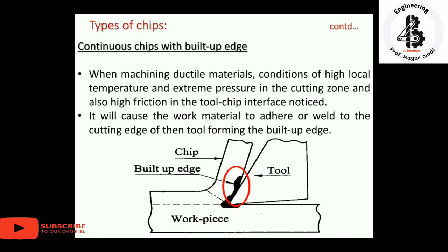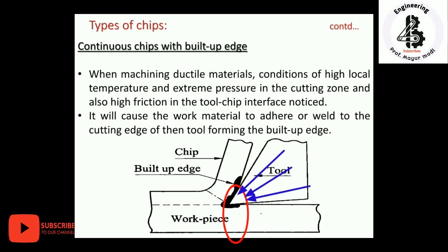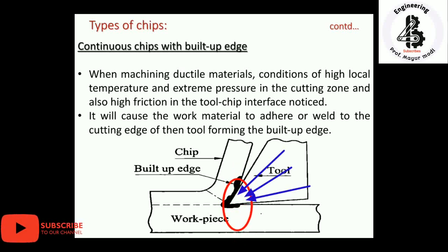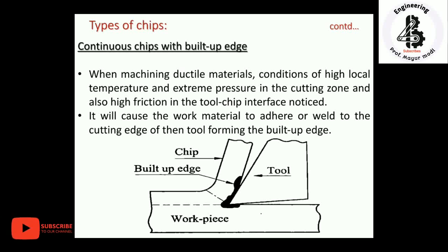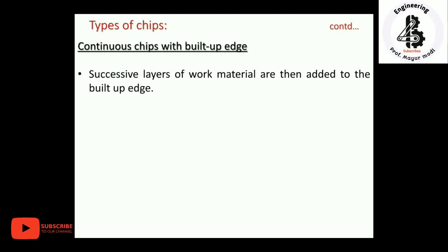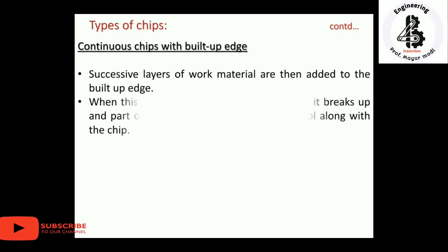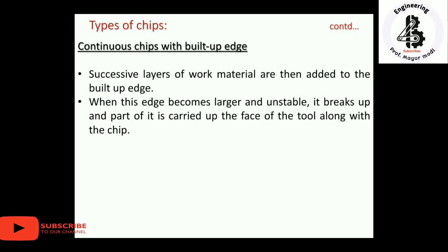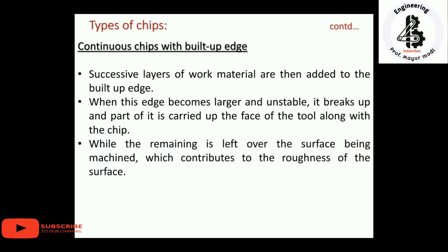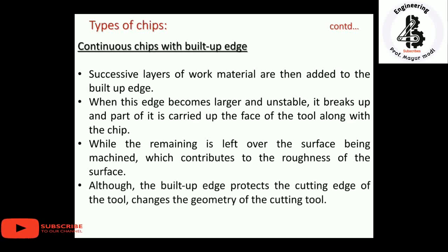Due to material defects on the workpiece or excessive heat developing at the tool-chip interface, a weld action is carried out, forming a continuous chip with built-up edge. Successive layers of work material are then added to the built-up edge. When this edge becomes larger and unstable it breaks up — part is carried up along the chip face, while the remainder is left on the machined surface, contributing to surface roughness. Although the built-up edge protects the cutting edge of the tool, it changes the tool geometry and generates crater wear.